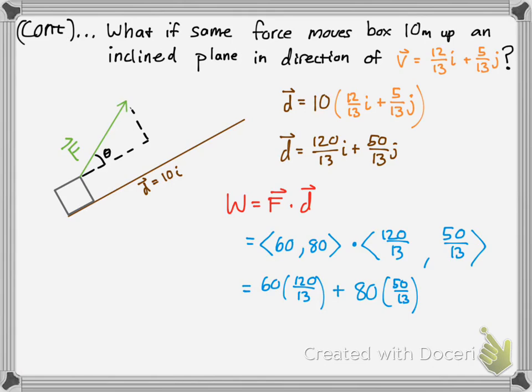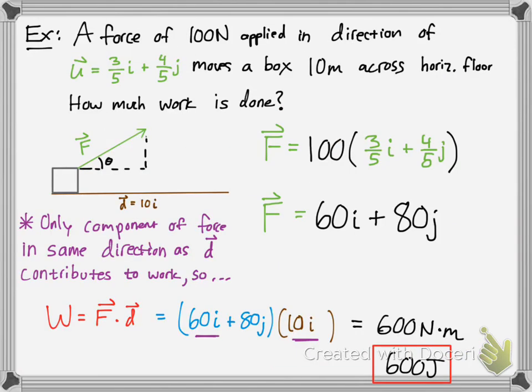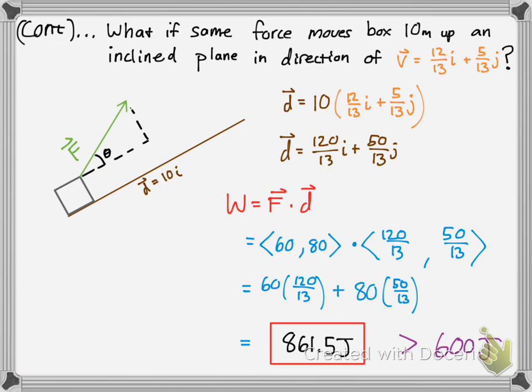60 times 120 over 13, then you add 80 times 50 over 13, using that shortcut we mentioned earlier, and you get 861.5 joules. Notice that this is actually more joules than if it were simply on a horizontal plane, so we required more work due to that incline.